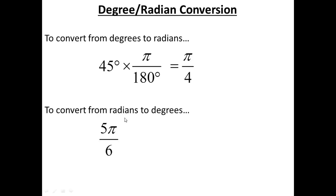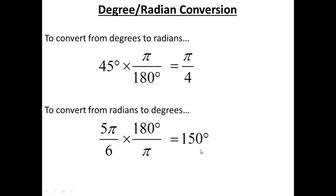Now let's convert from radians to degrees: 5π/6. There's no degree symbol, so this is a radian. To get rid of the radian and introduce degrees, I put 180 on top. The π's cancel, 6 goes into 180 thirty times, and 30 times 5 is 150 degrees. I didn't need a calculator — just did it in my head.